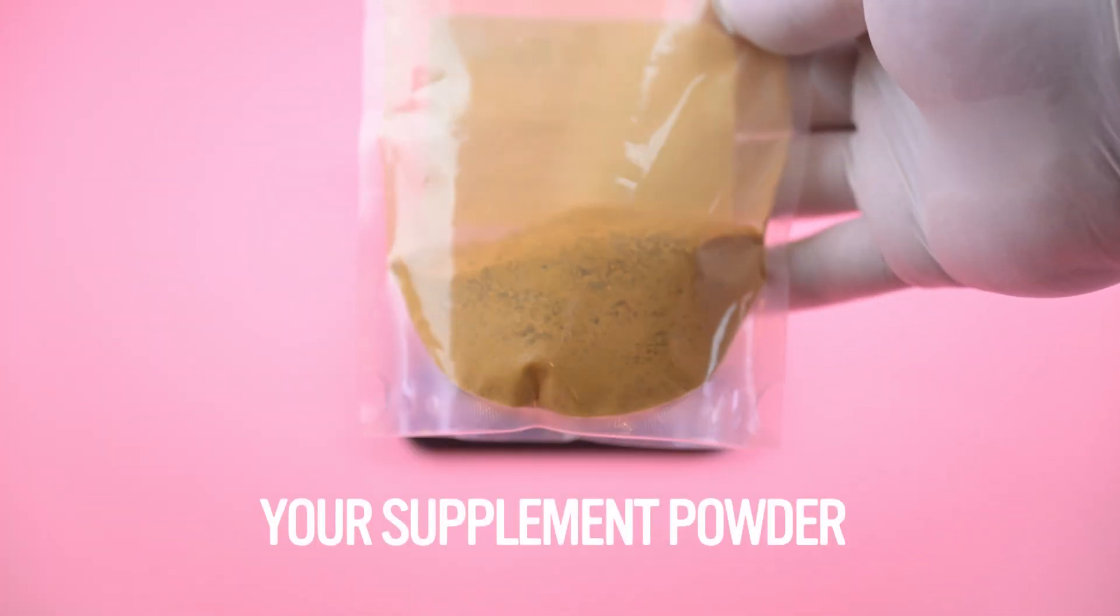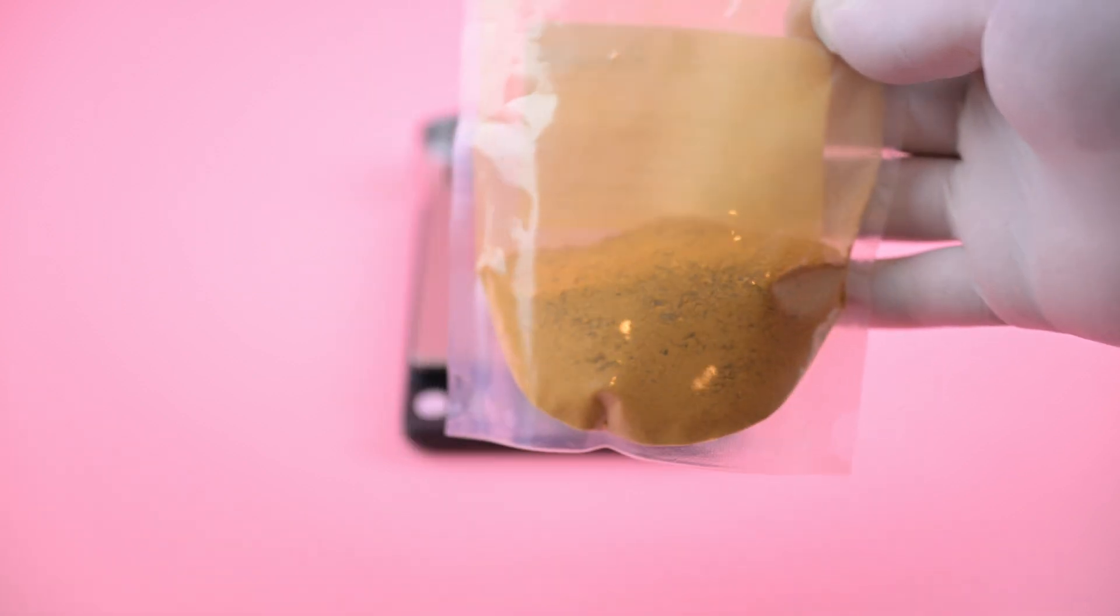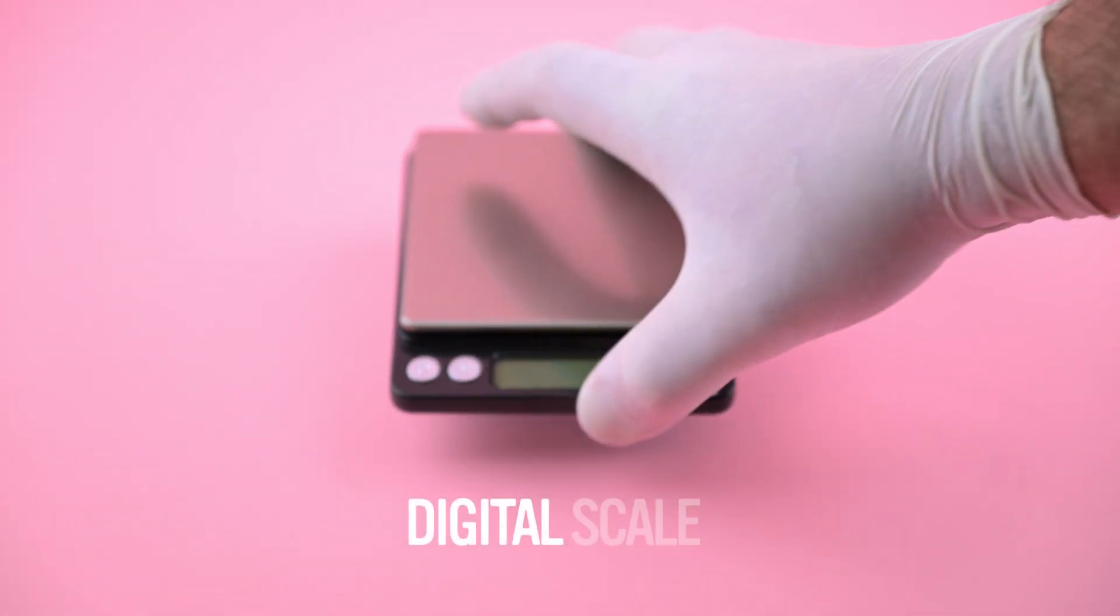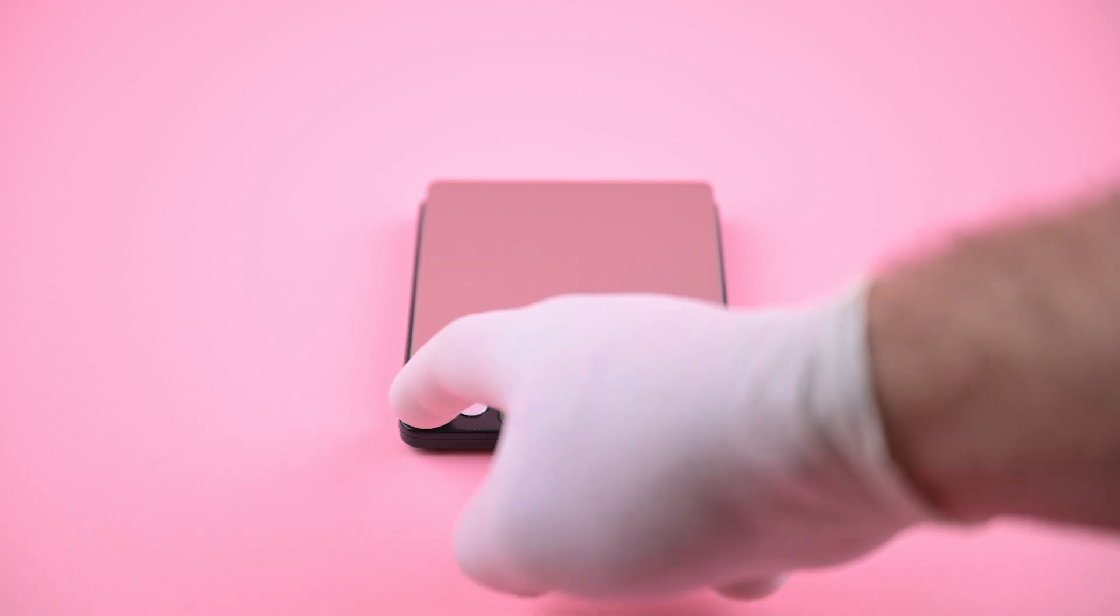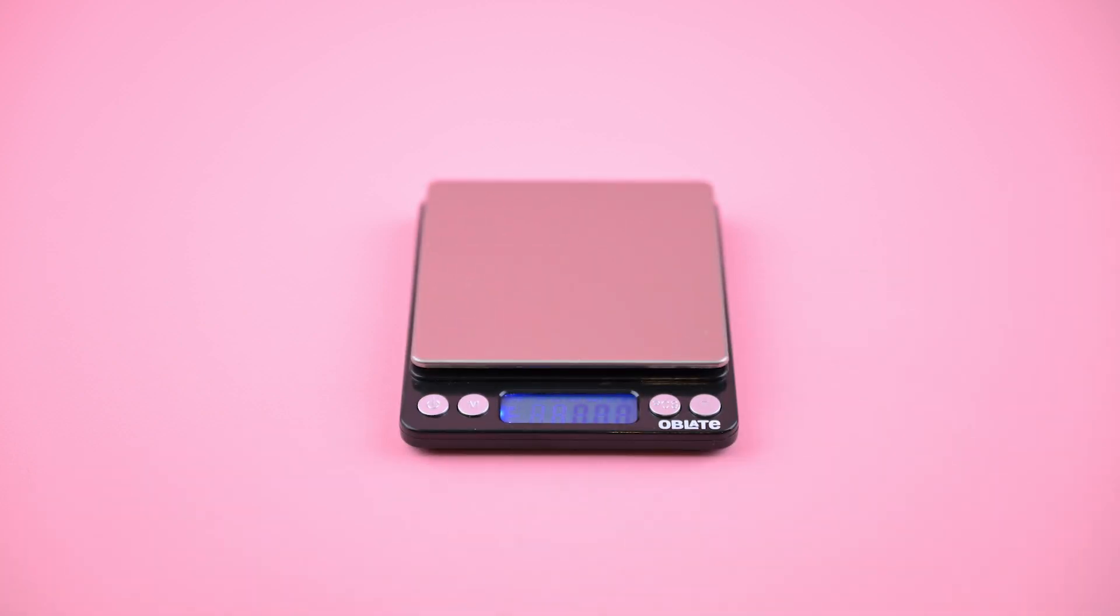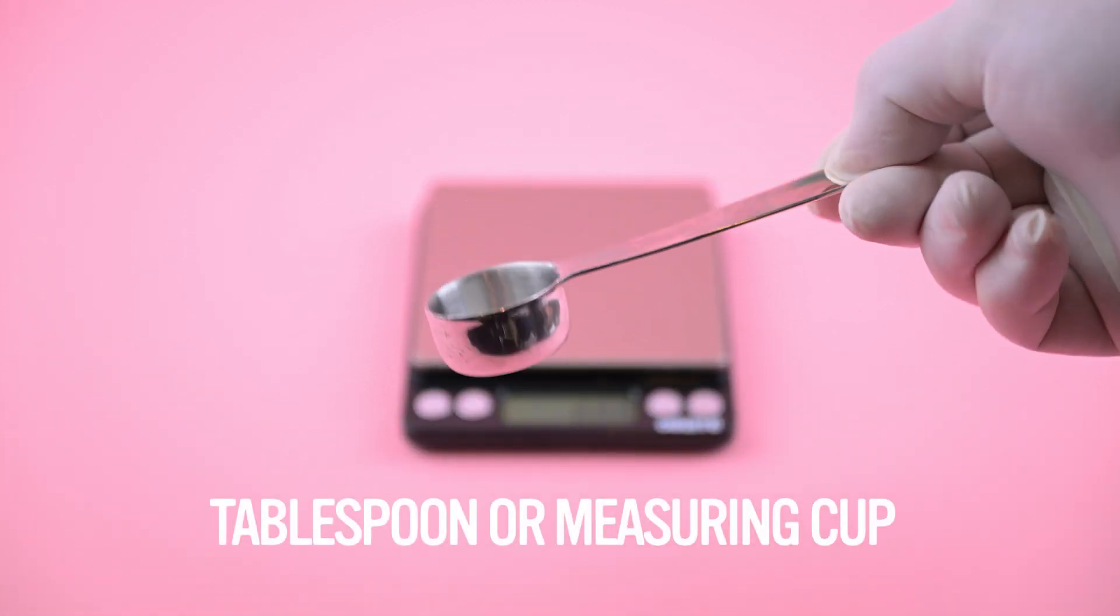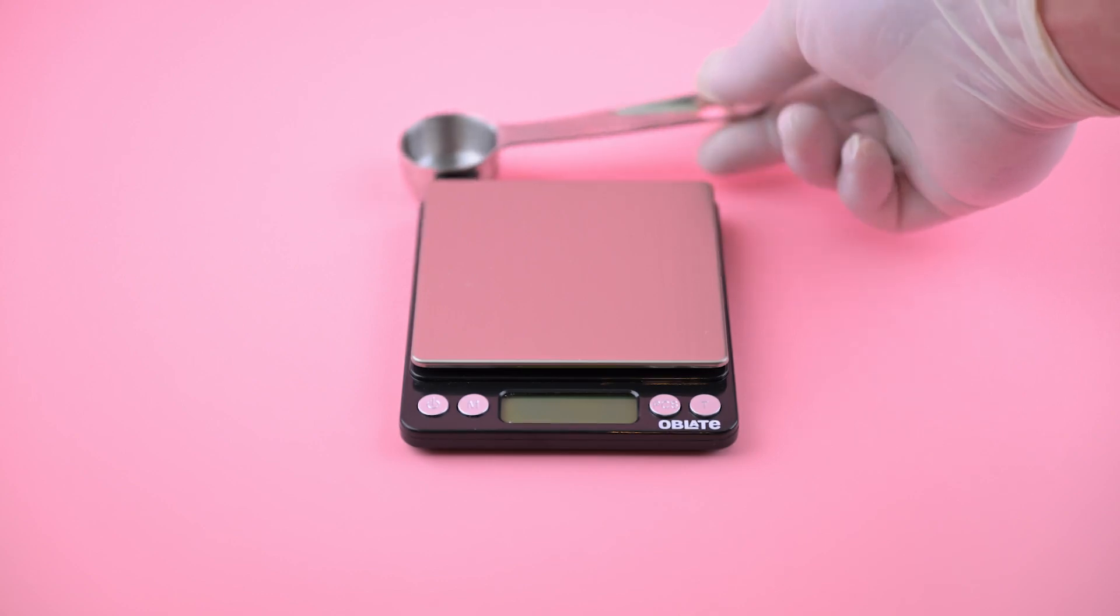To do this, you'll need your supplement powder, which is the powder you'll be putting into the capsules, and a digital scale. It should measure grams to at least two decimal places. The more sensitive it is, the better. Anything less than two decimal places will skew your estimate. And you need a tablespoon or measuring cup. Really, any volume measuring device will work.